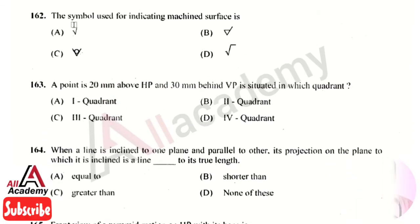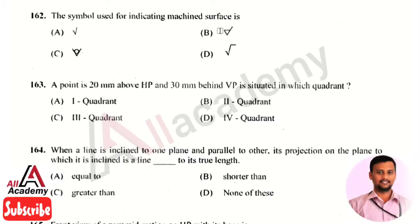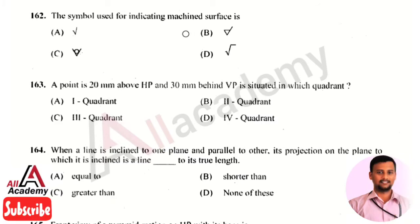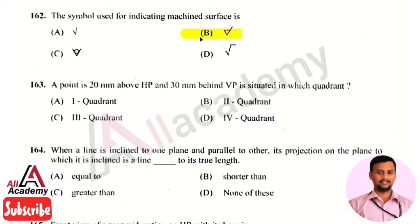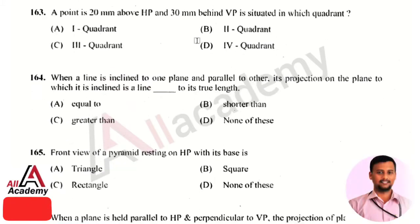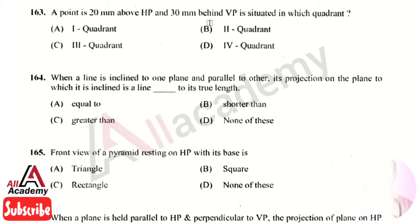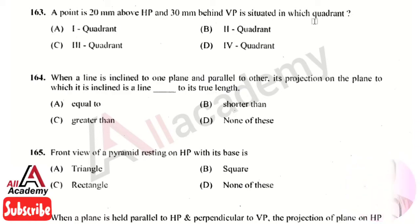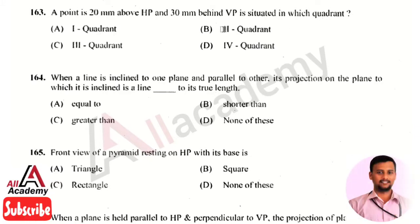The next question is: the symbol used for indicating a machined surface is? The right answer is option 2 — this symbol is used to indicate the machined surface. The next question is: a point is 20 mm above the HP and 30 mm behind the VP; it is situated in which quadrant? The right answer is option 2, the second quadrant.